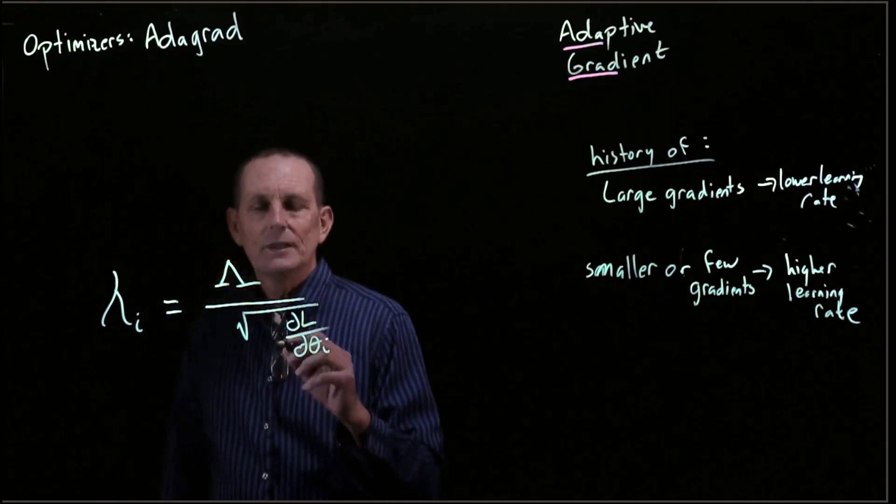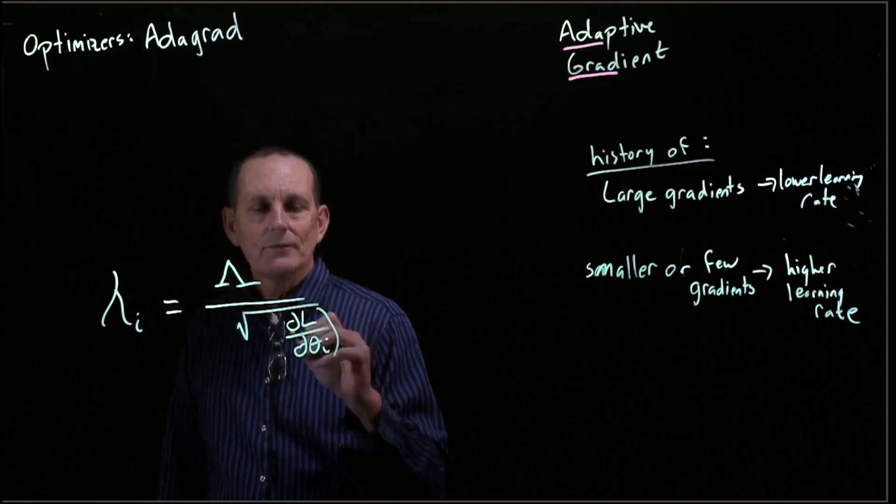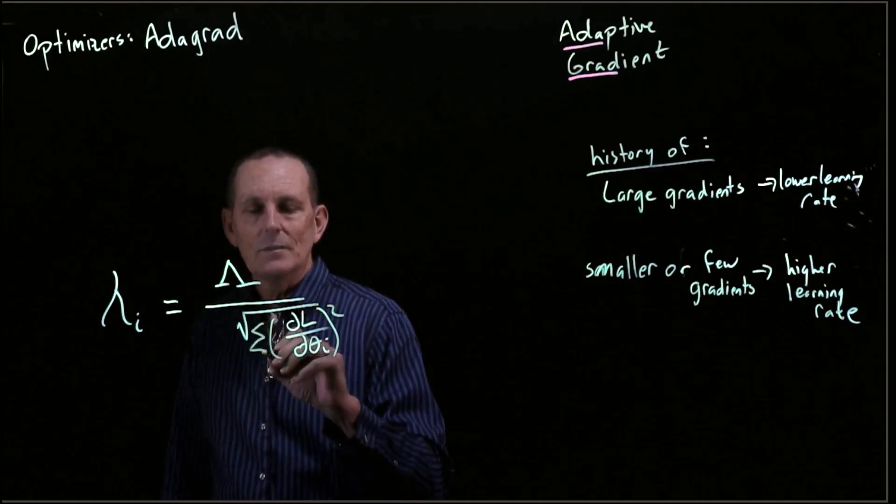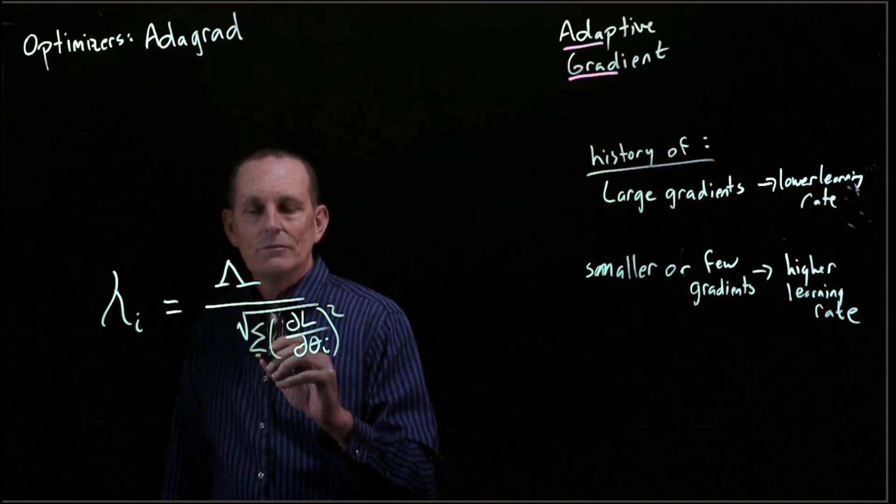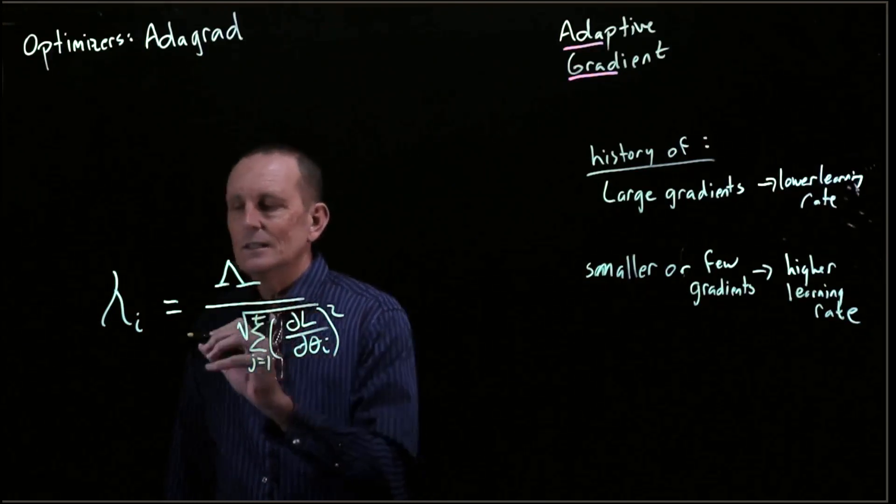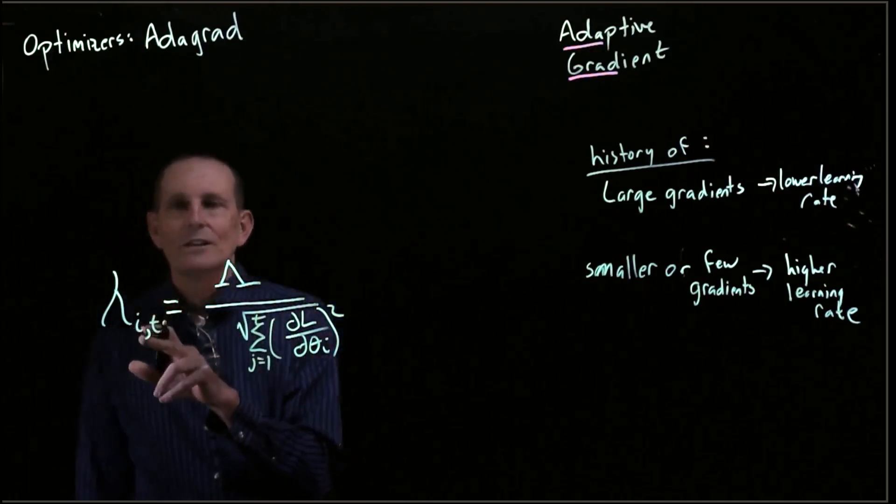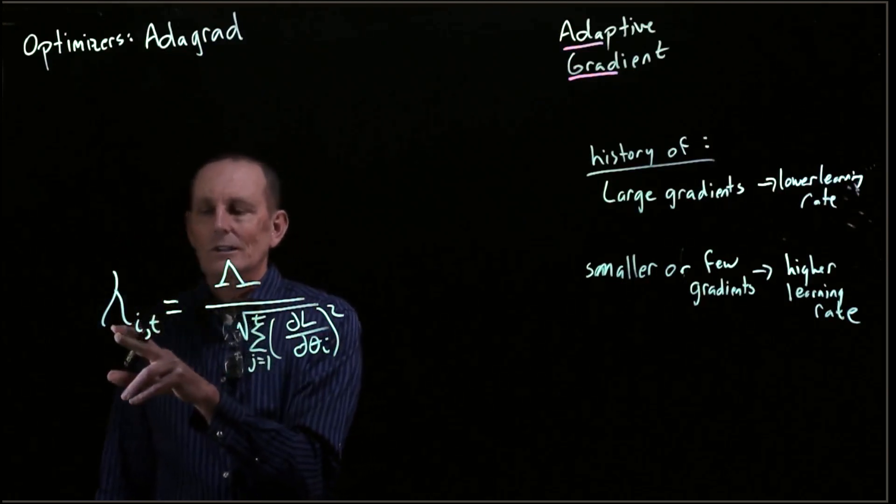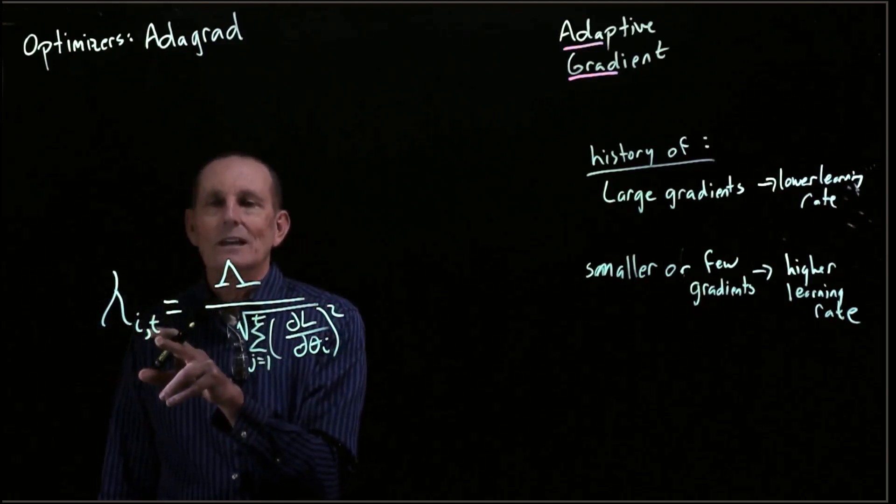We're going to take the gradient, square it, and we're going to take the sum from j equals 1 to t. So we're really looking at the learning rate for i at a given time t.